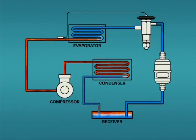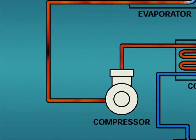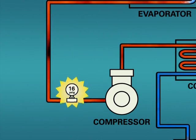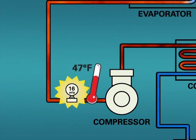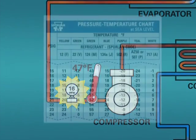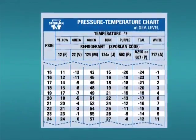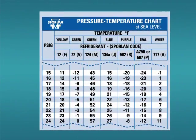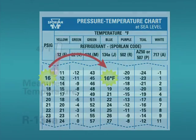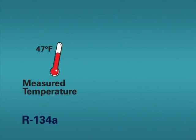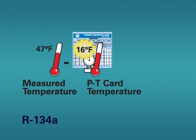As a second example, let's take readings at the compressor inlet. Our pressure gauge reads 16 PSIG and our measured temperature is 47 degrees Fahrenheit. To calculate our superheat, we again reference our PT card. 16 PSIG on the PT card indicates a temperature of 16 degrees Fahrenheit. The difference between 47 degrees Fahrenheit measured temperature and 16 degrees Fahrenheit from the card is 31 degrees Fahrenheit of superheat.